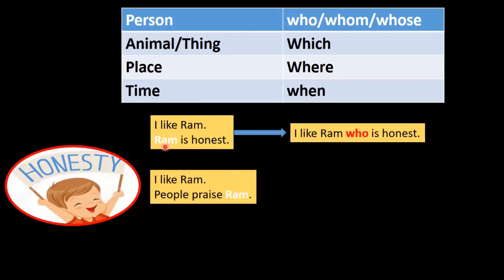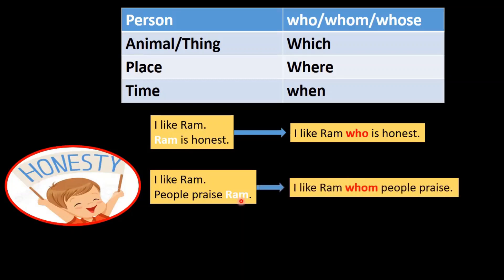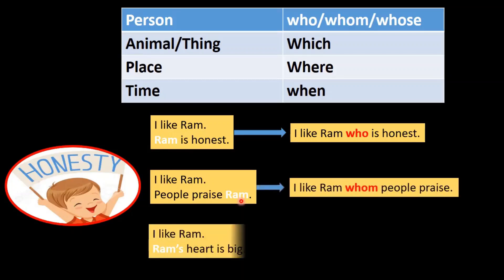Similarly, in the second example: I like Ram. People praise Ram. Ram is not in the subject position as in the first example. Here we have Ram in the object position. So when the word appears in the object position, we go with the relative pronoun whom. And the answer is: I like Ram whom people praise.